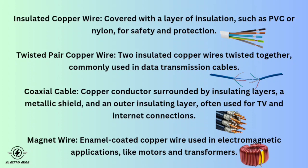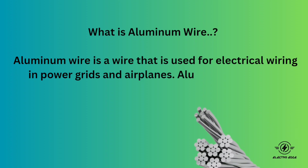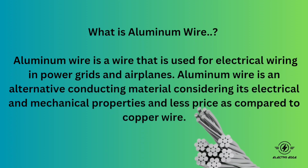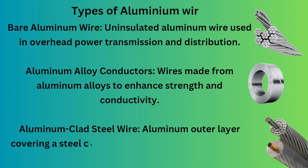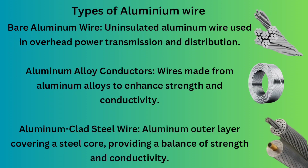What is aluminum wire? Aluminum wire is a wire used for electrical wiring in power grids and airplanes. It is an alternative conducting material, considering its electrical and mechanical properties and lower price compared to copper wire. Types of aluminum wire: Bare aluminum wire is uninsulated aluminum wire used in overhead power transmission and distribution.